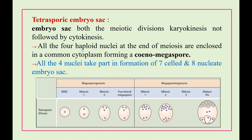The third type is tetrasporic embryo sac. In tetrasporic embryo sac development, both the meiotic divisions involve karyokinesis not followed by cytokinesis. That means in meiosis 1 and 2, there is no formation of a cell plate. So all 4 megaspores participate in the formation of the embryo sac, and there is no degeneration of any of the megaspores.